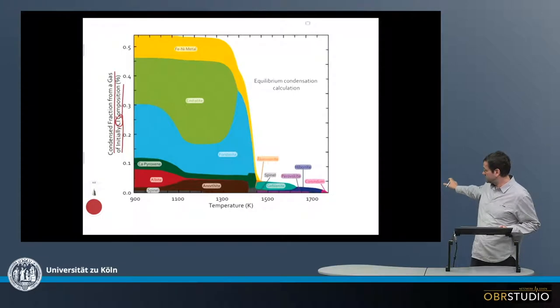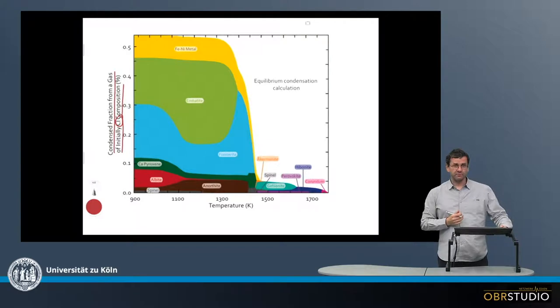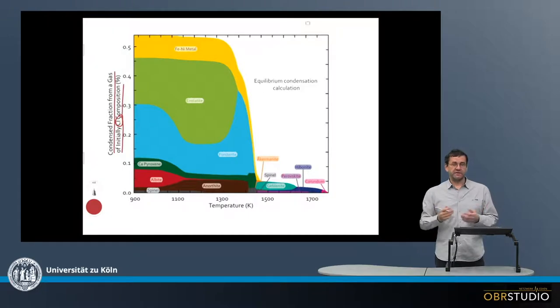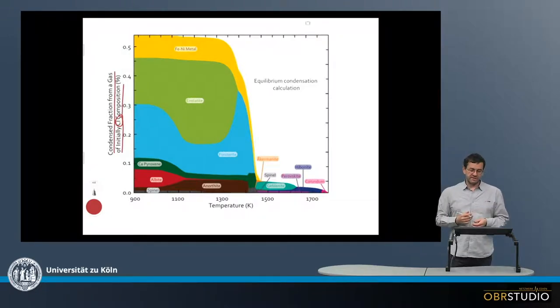So initially when everything was in the gas there is nothing that is condensed so everything is at zero. Then upon cooling, the first minerals and elements to condense are the refractory elements. And these are for example calcium, aluminum, titanium, or the rare earth elements.